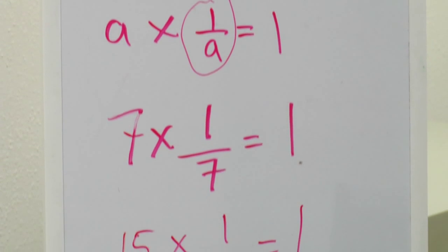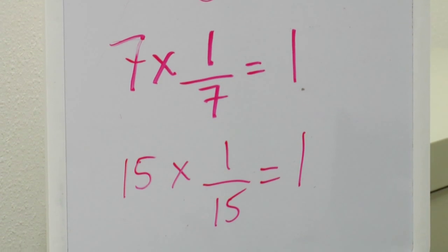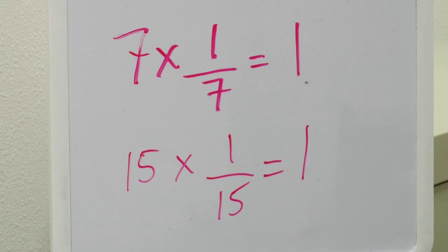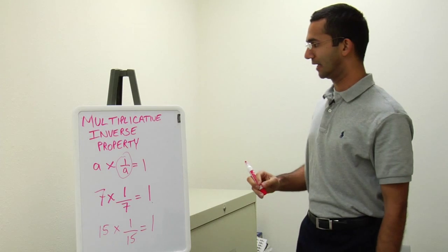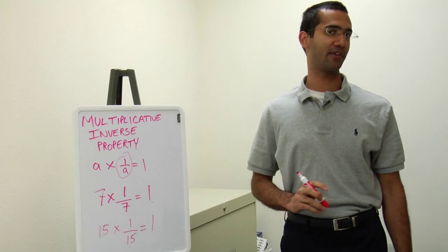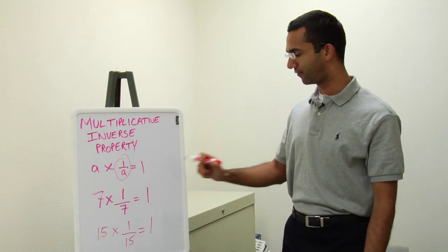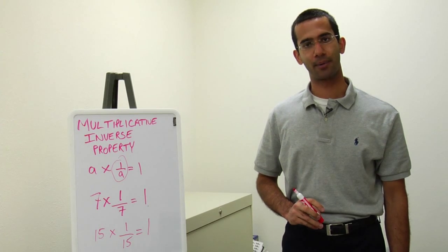So this is going to be true in every sense for a times 1 over a will equal 1. This is the definition of the multiplicative inverse property and a few examples of the multiplicative inverse property.